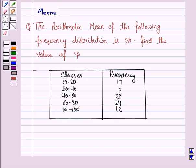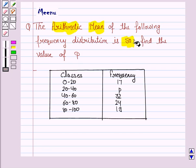Hello students, let's work out the following problem. The arithmetic mean of the following frequency distribution is 50. Find the value of P. This is the given frequency distribution and we have to find the value of P.